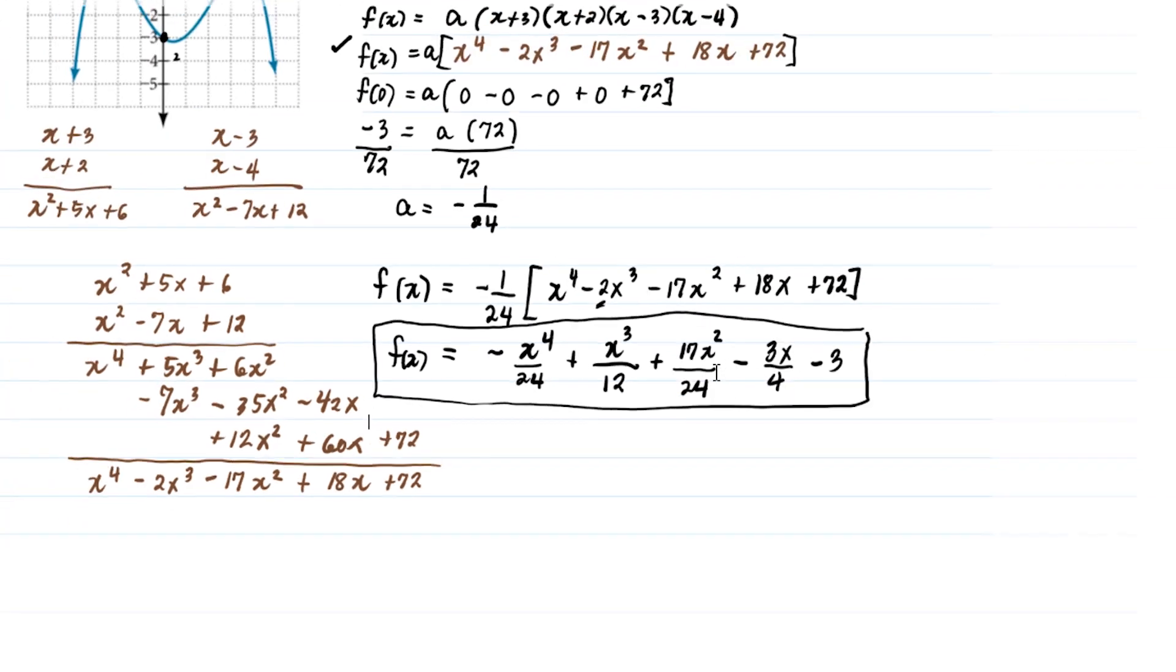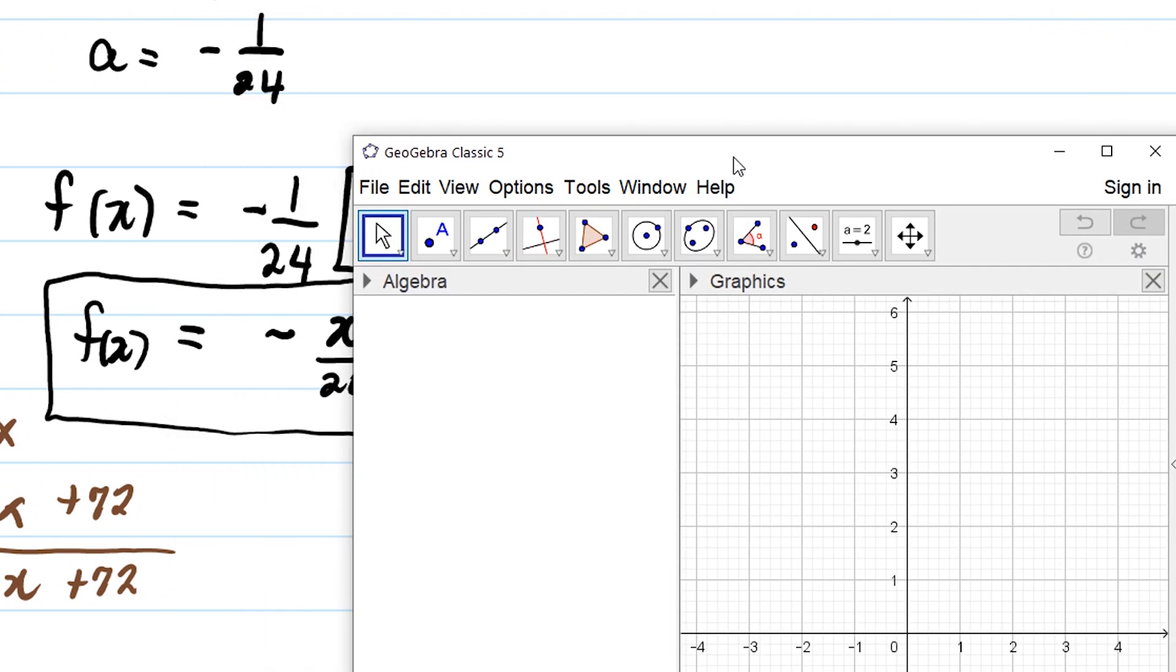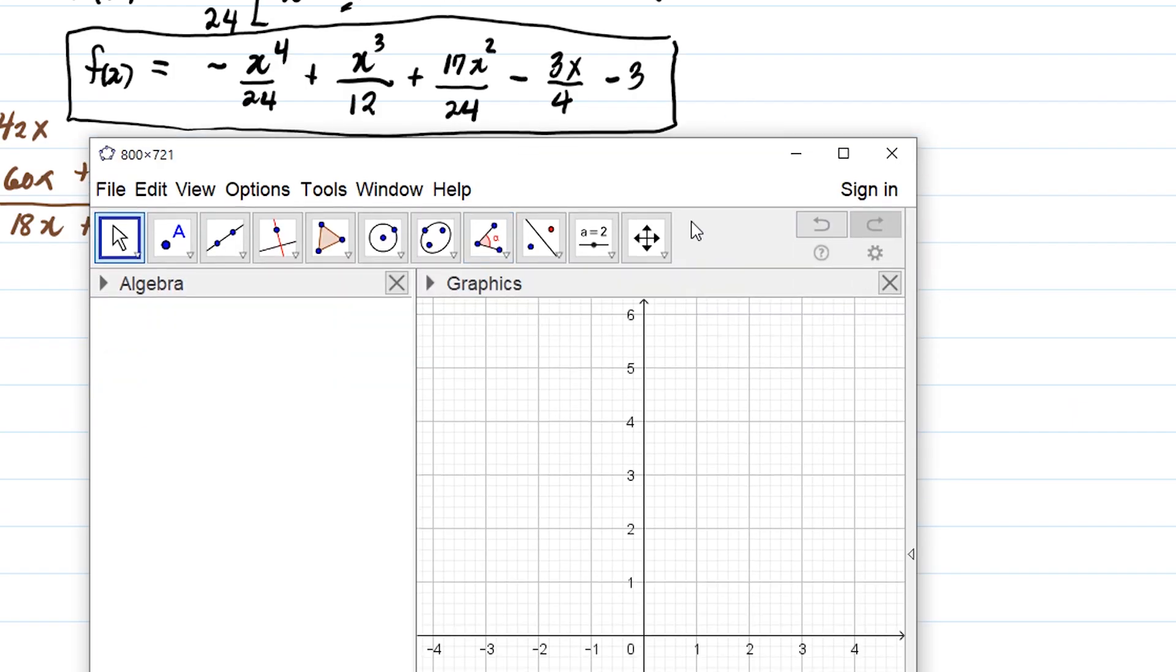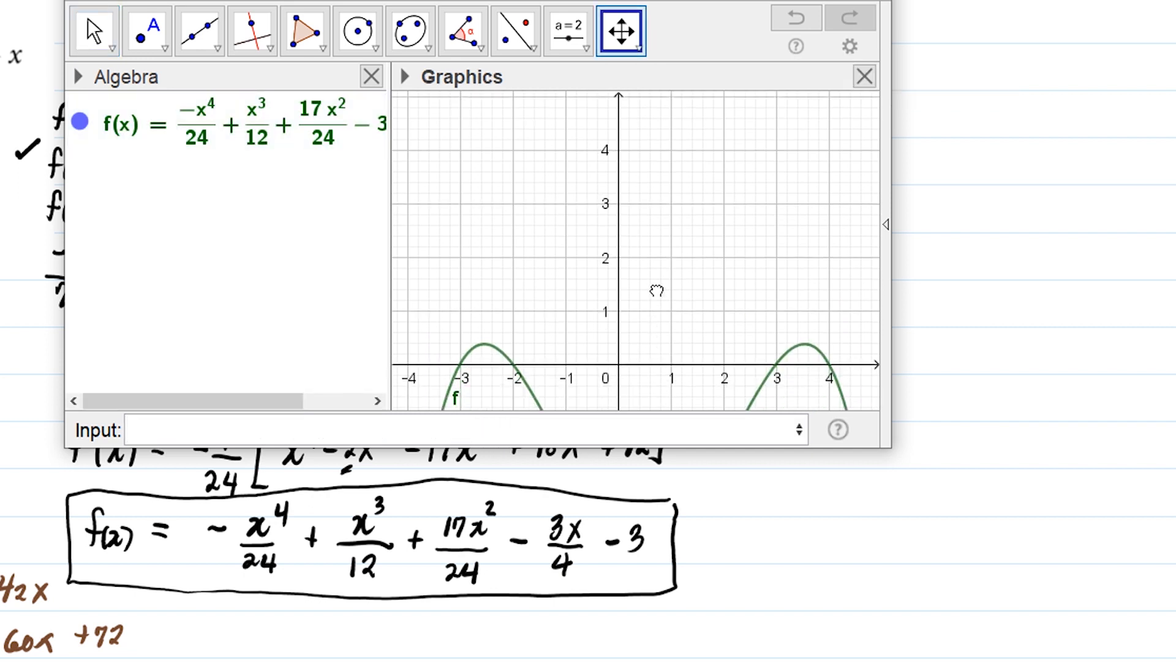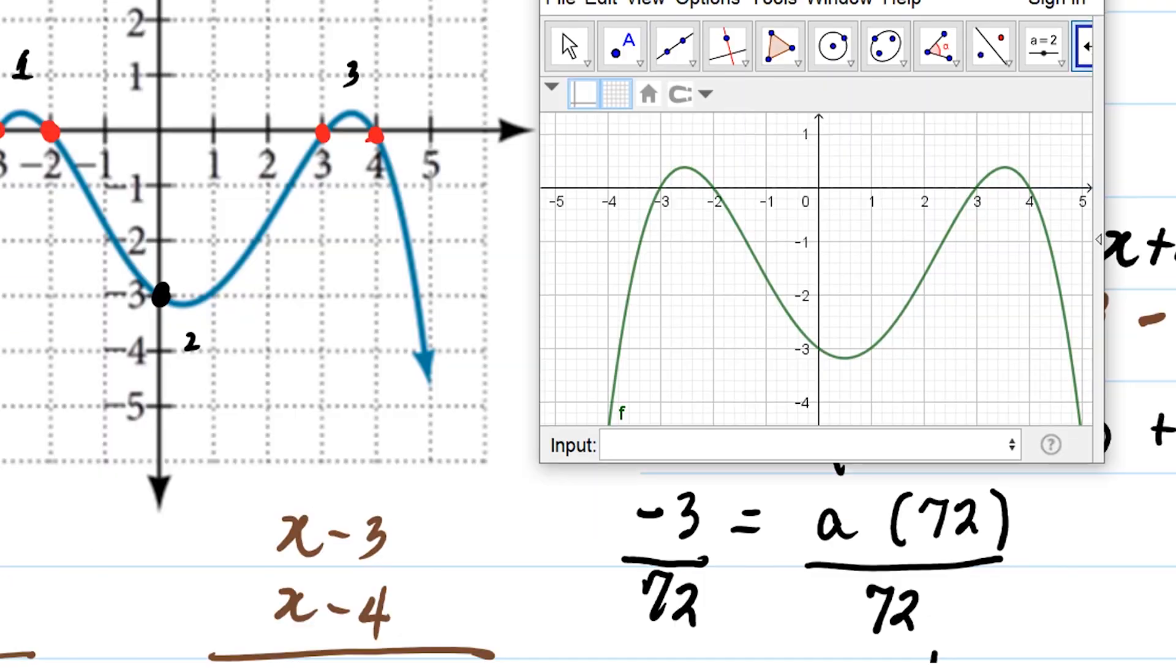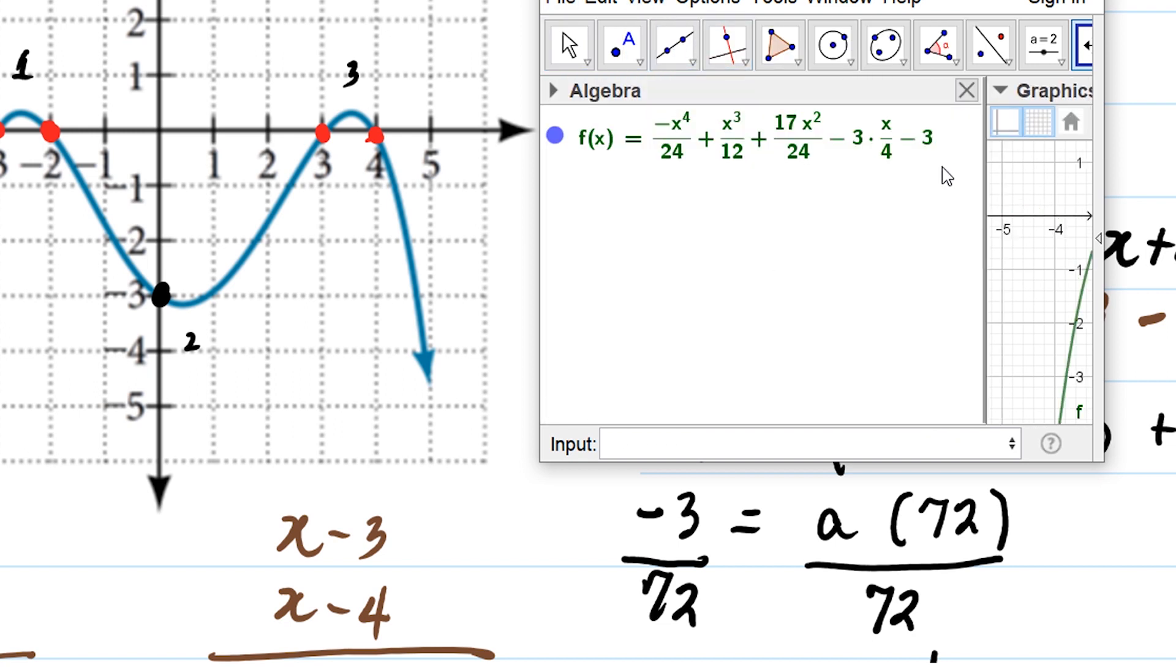There's one way to verify it. Let's use GeoGebra to sketch the graph of this function. Let's activate algebra and graphics. All we have to do is plug in the equation. We have f(x) equals minus x raised to 4 divided by 24, plus x cubed divided by 12, plus 17x squared divided by 24, minus 3x over 4, minus 3. Press enter. Let's look for our graph and compare. Based on the graph, we're verifying. Therefore, the equation of this graph is this one over here.